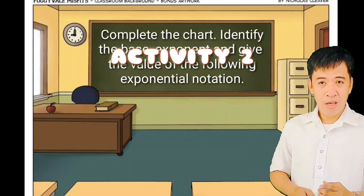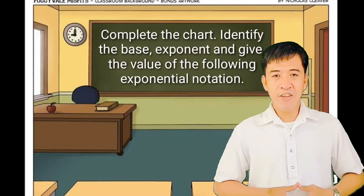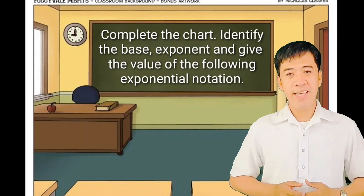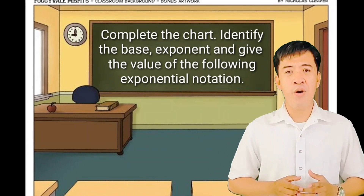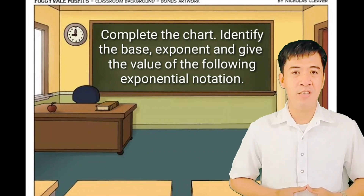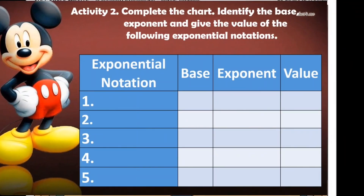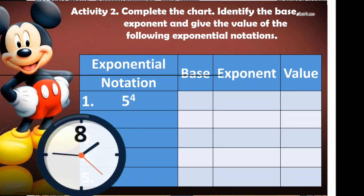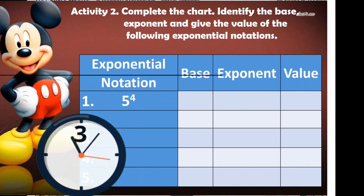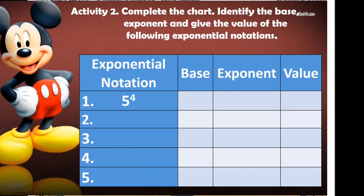Activity 2. Complete the chart. Identify the base, exponent, and give the value of the following exponential notations. Number 1: 5 to the 4th power. What is the base, exponent, and the value? The base is 5, exponent is 4, and the value is 625.